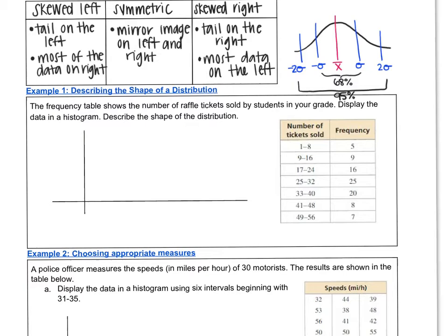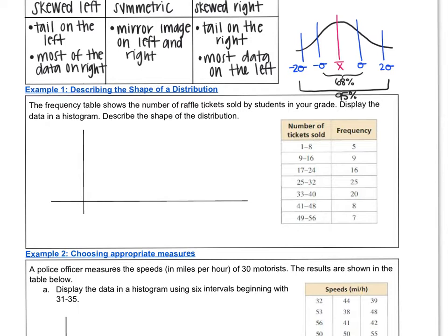Let's take a look at the first example. The frequency table shows the number of raffle tickets sold by students in your grade. Display the data in a histogram and describe the shape of the distribution. A histogram is similar to a bar graph. It's a way for us to display information that's in a frequency table. So this frequency table says one through eight tickets were sold five times.